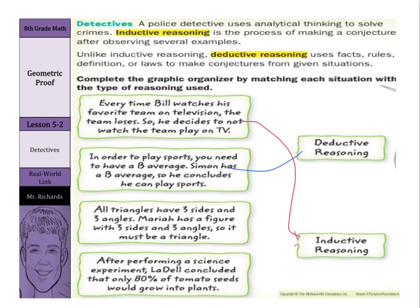All triangles have three sides and three angles. Mariah has a figure with three sides and three angles, so it must be a triangle. Again, using rules, facts, definitions, and laws to come up with an answer — so that's deductive reasoning.